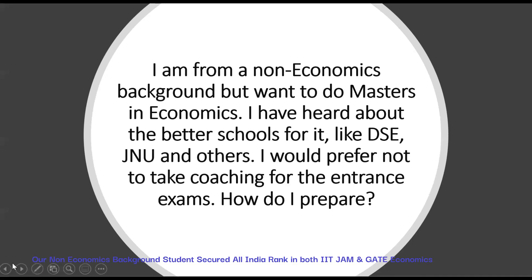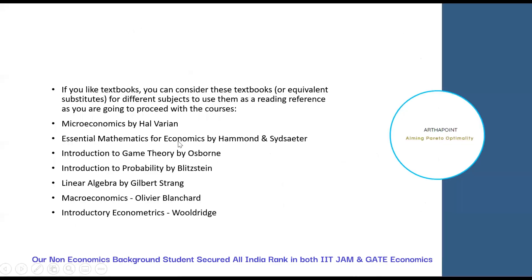To begin with, the book that has to be followed for microeconomics is Hal Varian. I would divide the entire microeconomics into four main modules: consumer theory, producer theory, general equilibrium, and public goods, externalities, and moral hazard problems. All these four topics have to be covered in depth and breadth from Hal Varian.